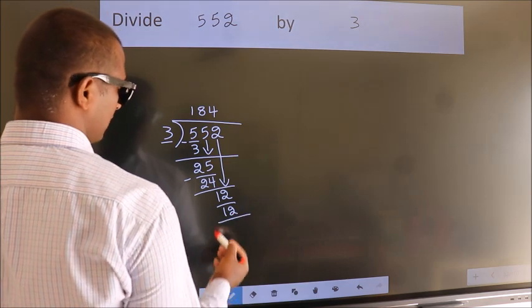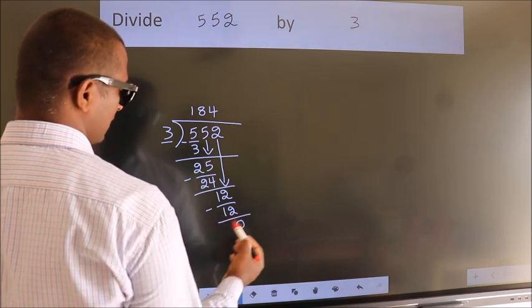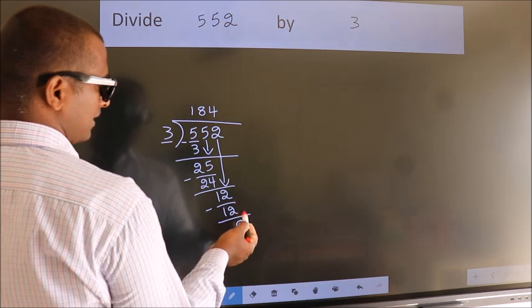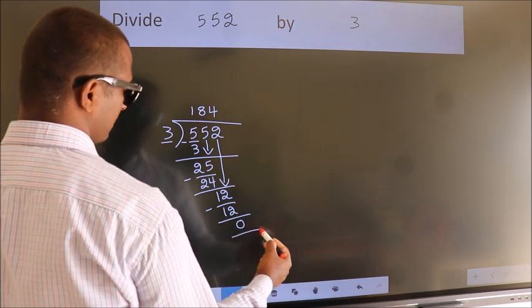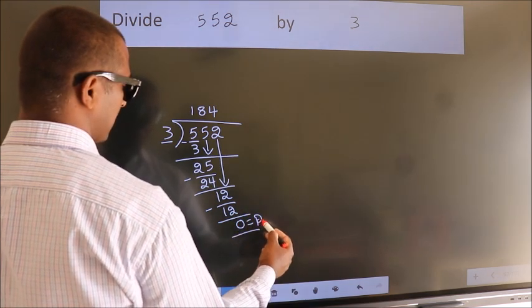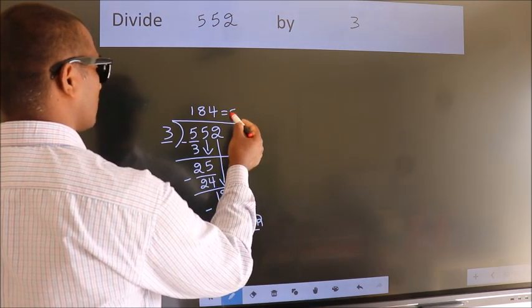Now, we subtract. We get 0. No more numbers to bring down. So, we stop here. This is our remainder. This is our quotient.